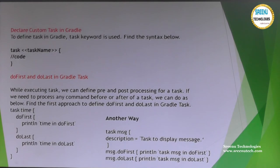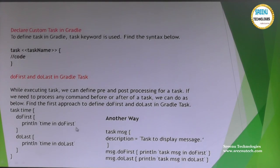While executing a task, we can use pre-processing and post-processing. Here I define a task with the name 'time'. Inside it I want to perform doFirst operations, and we define a doLast block for the post-processing code. Sometimes if you have an already-configured task, you may not want to modify the task block to add doFirst or doLast.